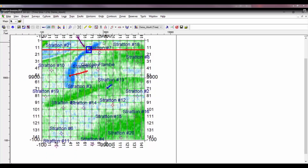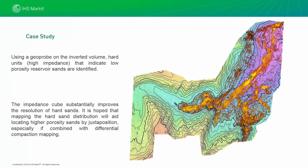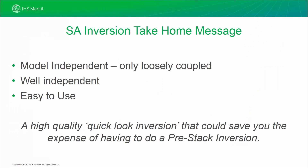Here, we also have a case study. Within this section, the company drilled on this location on an AVO bright spot, and oil came in and everyone was happy. They then drilled the second AVO bright spot, and the well came in dry. SA inversion was used and a low porosity reservoir sand was identified. The impedance cube substantially improves the resolution of hard sands, and it is hoped that mapping the hard sand distribution will aid locating higher porosity sands by juxtaposition, especially if combined with differential compaction mapping. The SA inversion take-home message is that it's model independent, only loosely coupled with it, well independent and easy to use. It's a high quality quick look inversion that could save you the expense of having to do a pre-stack inversion.